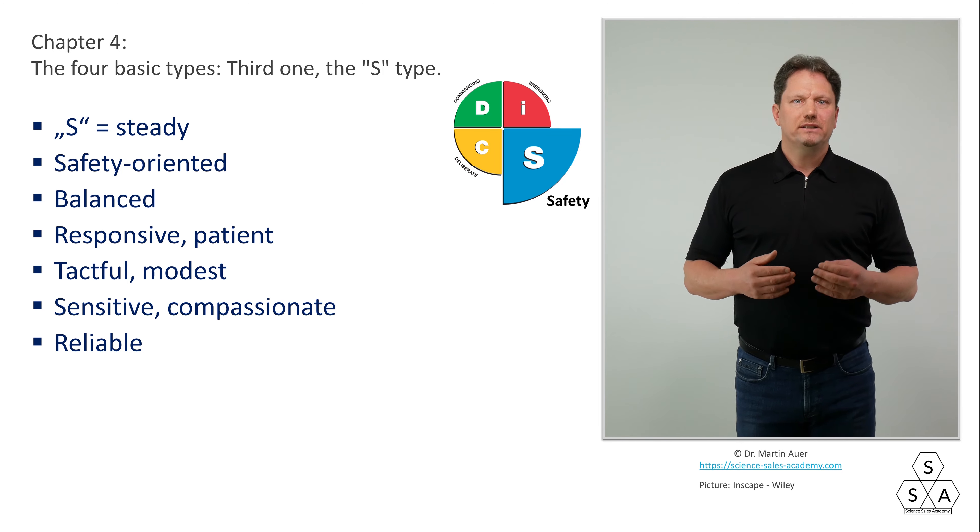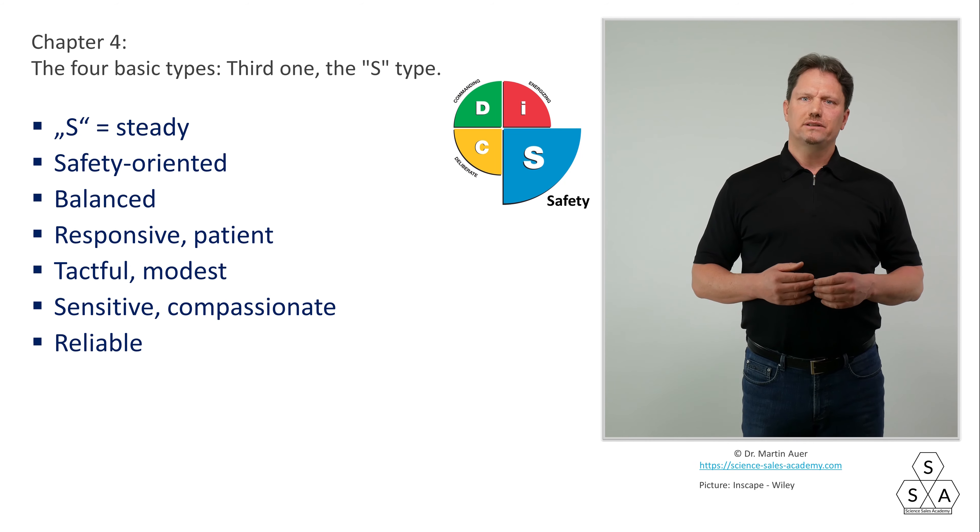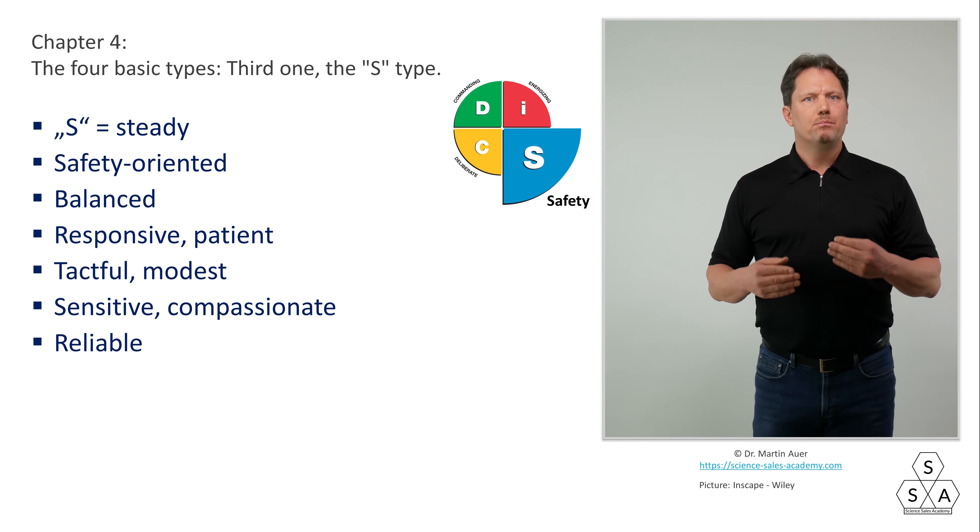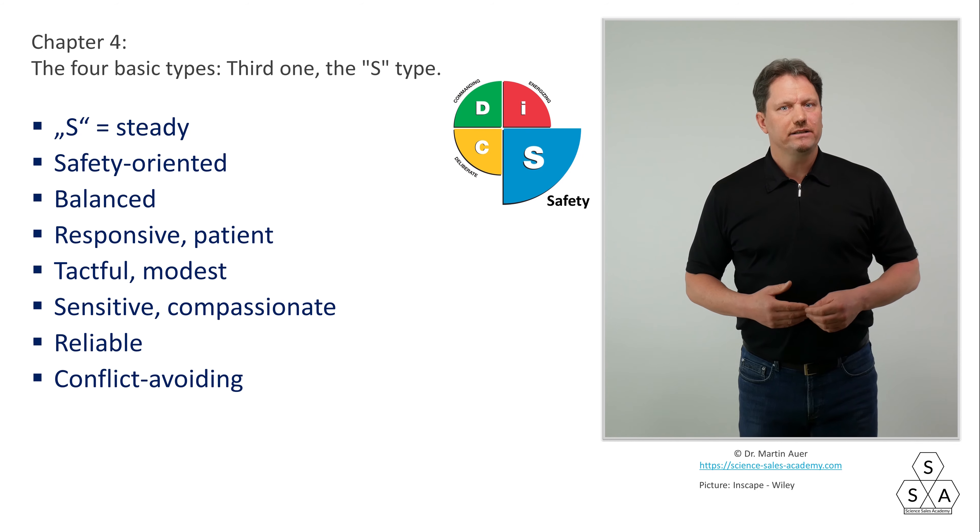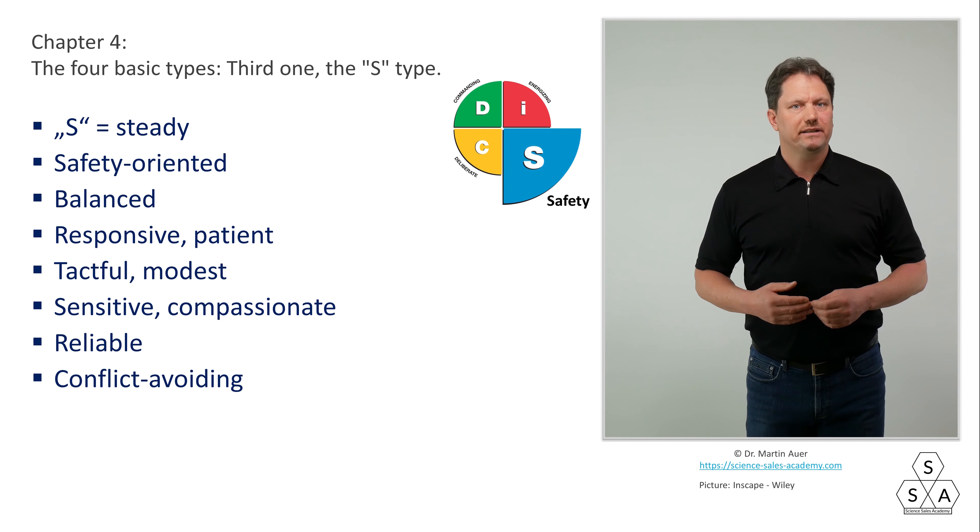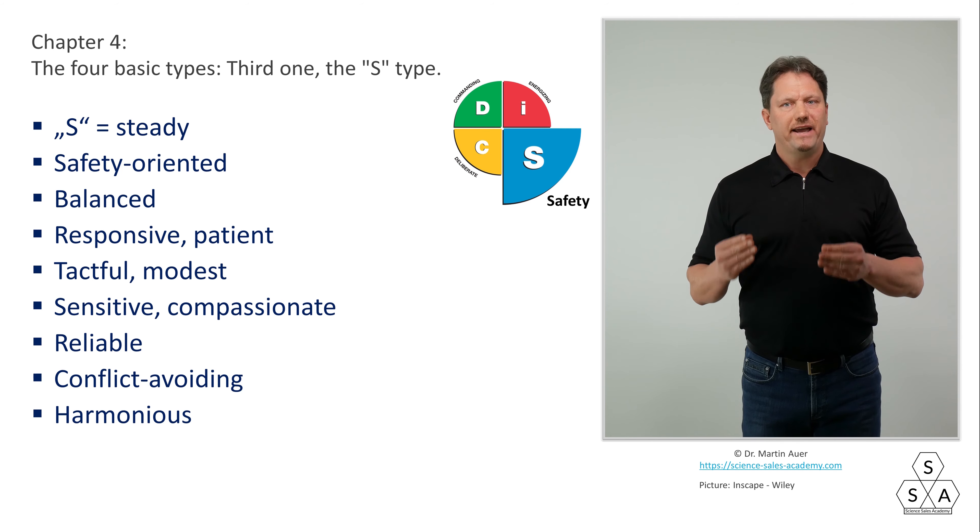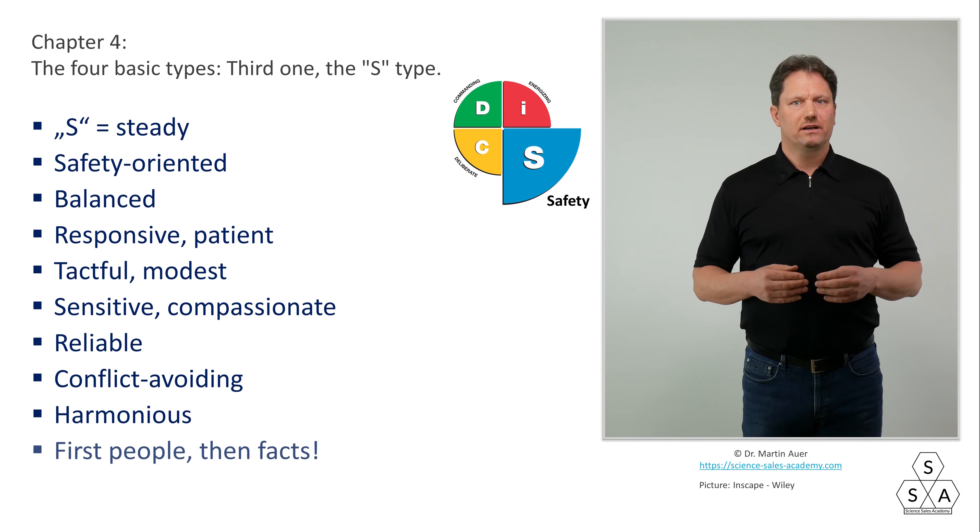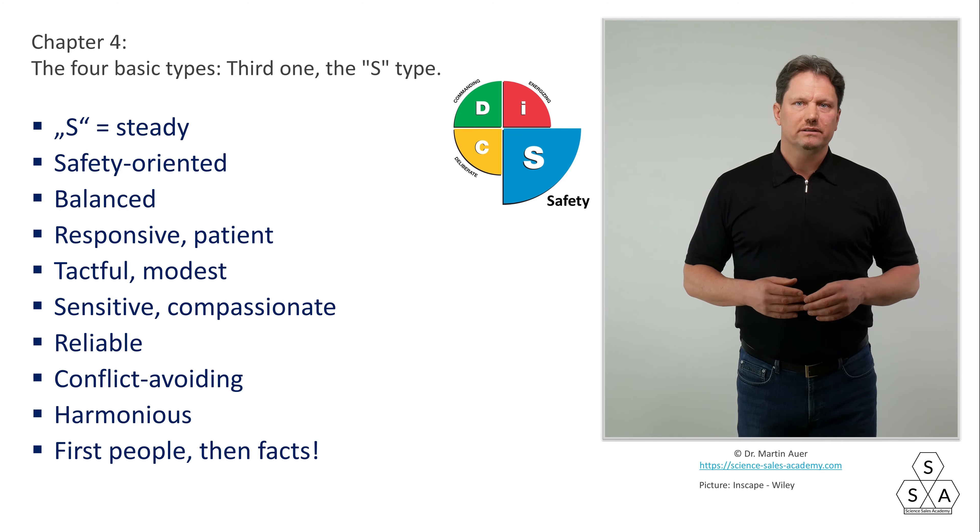The S-type is diametrically opposed to the D-type. These diametrically opposed positions also express the differences between the two basic types, which certainly bear potential for conflict. For example, while the D-type may not necessarily be averse to a good conflict, a S-type will avoid any conflict as long and as well as they can, because the S-type is very harmonious. While in the thinking of a D-type, facts come first and less the people, it's exactly the other way around with the S-type. Here, first people, then the facts.